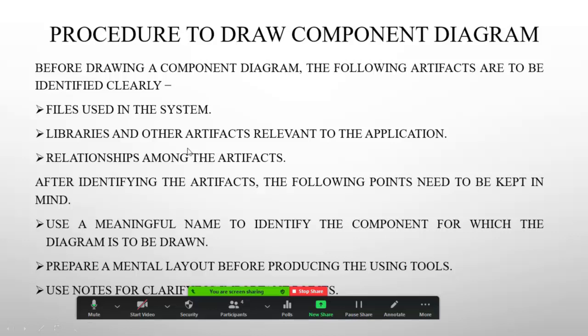Next is the relationships among the artifacts. Artifacts are basically the components — libraries and functions that the software developer has used. The relationships between them are what you need to identify while designing the component diagram.